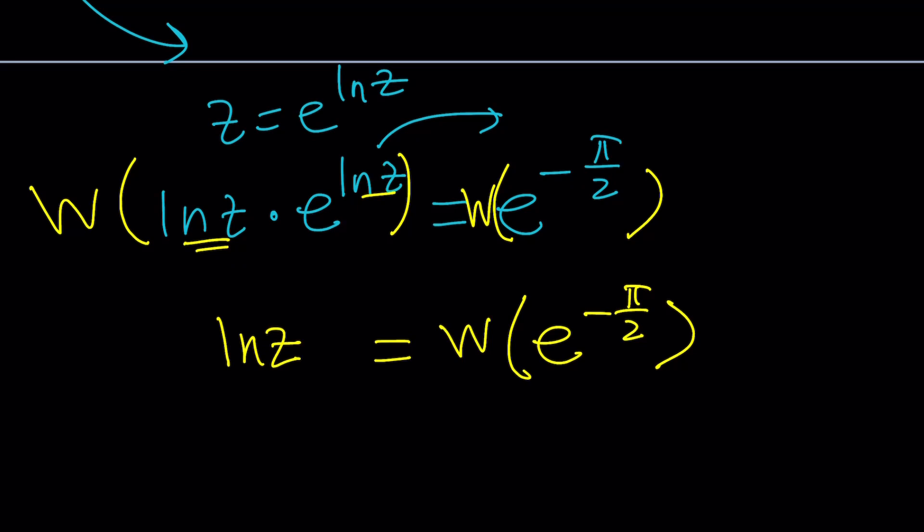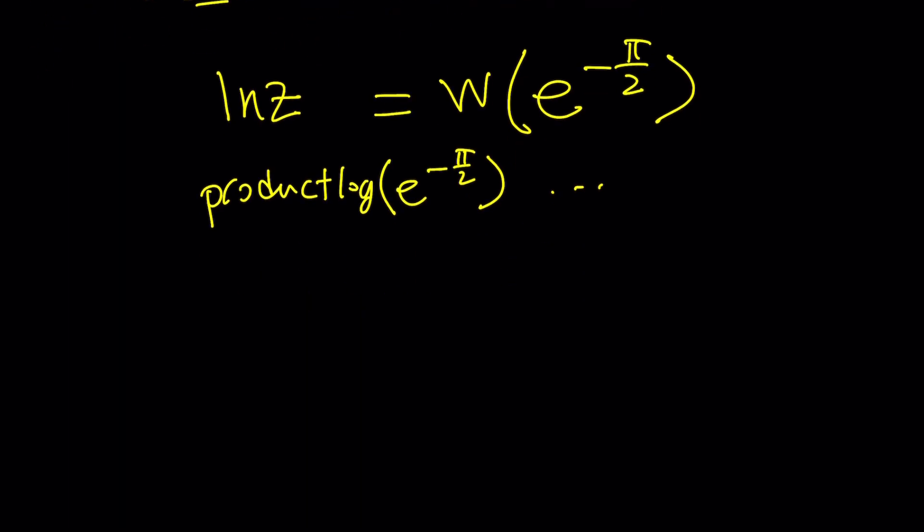Now if you enter this into Wolfram Alpha, I didn't do it for you because I'm lazy but come on you can do it right. You can kind of prompt it this way: product log directly on, no spaces, and then put parentheses e to the power negative pi over 2 and it's going to give you a bunch of good answers. Take a good look at them because you're going to get the answer. Make sense? But guess what this is not what I'm looking for because I'm looking for z. How do I find z?